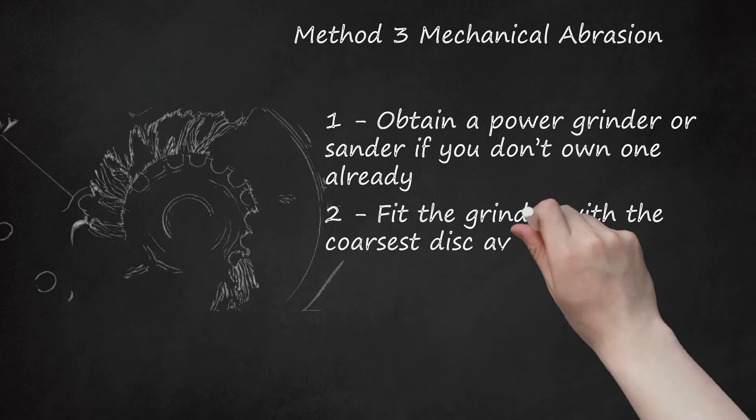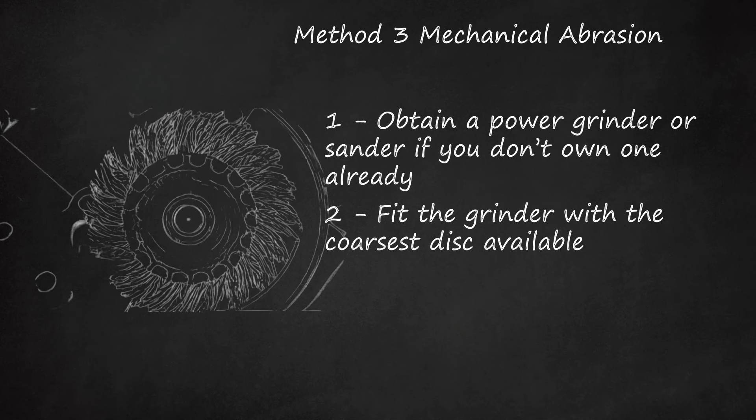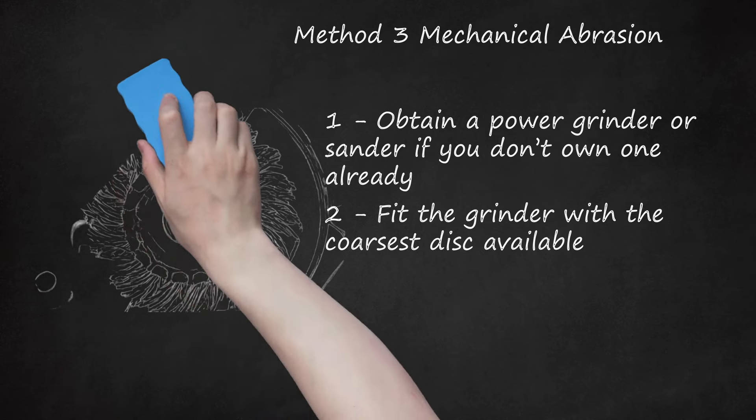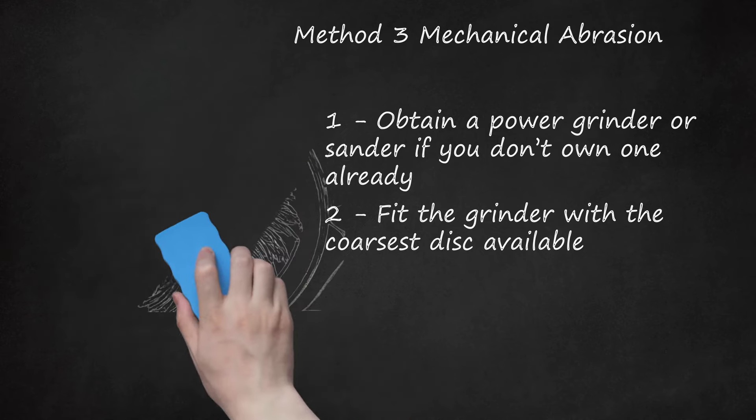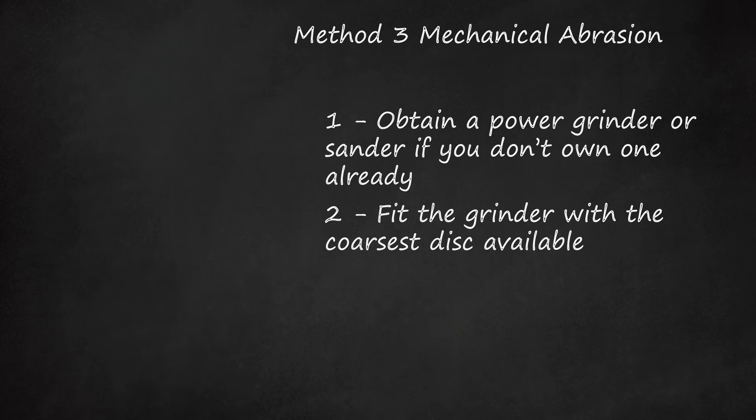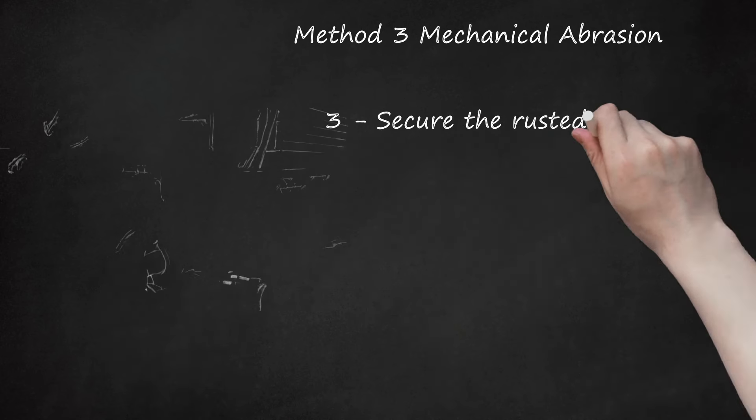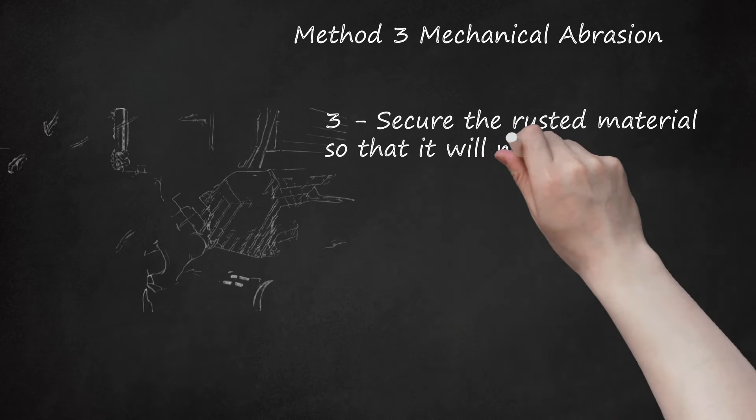Second, fit the grinder with the coarsest disc available. Grinders are equipped with removable discs, which are interchangeable and replaceable once they've been worn down to uselessness. Stripping, fiber, and flap discs work well. It is best to start grinding away the rust using the largest, toughest of these to quickly do away with the worst of the rust and avoid needlessly wearing down the smaller, more sensitive ones.